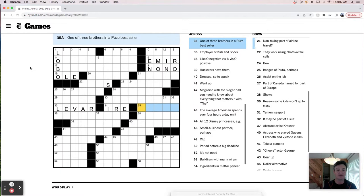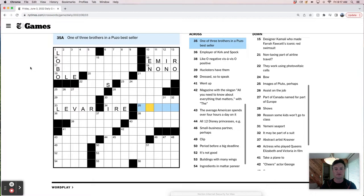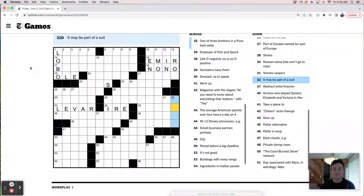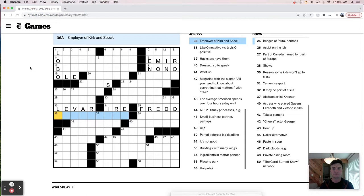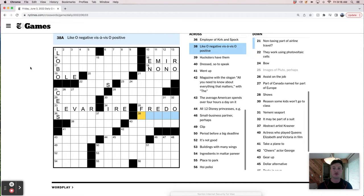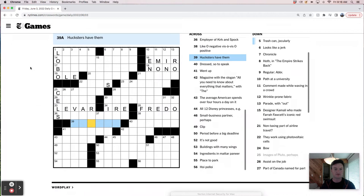One of three brothers in a Puzo bestseller. So that's The Godfather. So it's either Sonny or Fredo. Fredo, cause it's not Michael. Or the suit. I would've thought that was like a vest, but it was like a coat, maybe. I'm gonna say this is Fredo. Employer of Kirk and Spock. Like, star something. This is cells. Starship. Right. Like O vis-a-vis, like O negative vis-a-vis O positive. Hucksters have them. Is it ale, aliases?